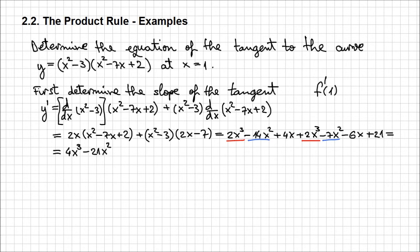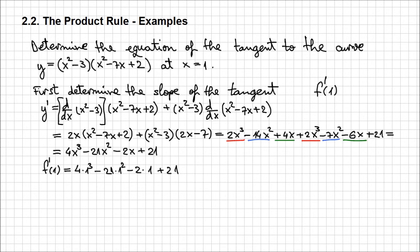Adding all the like terms together, we end up with 4x cubed minus 21x squared minus 2x plus 21. This is the expression for the slope of the tangent. Now let's calculate the slope when x is 1: f prime of 1 is going to be 4 times 1 cubed minus 21 times 1 squared minus 2 times 1 plus 21, which equals 2 — the slope of the tangent when x equals 1.